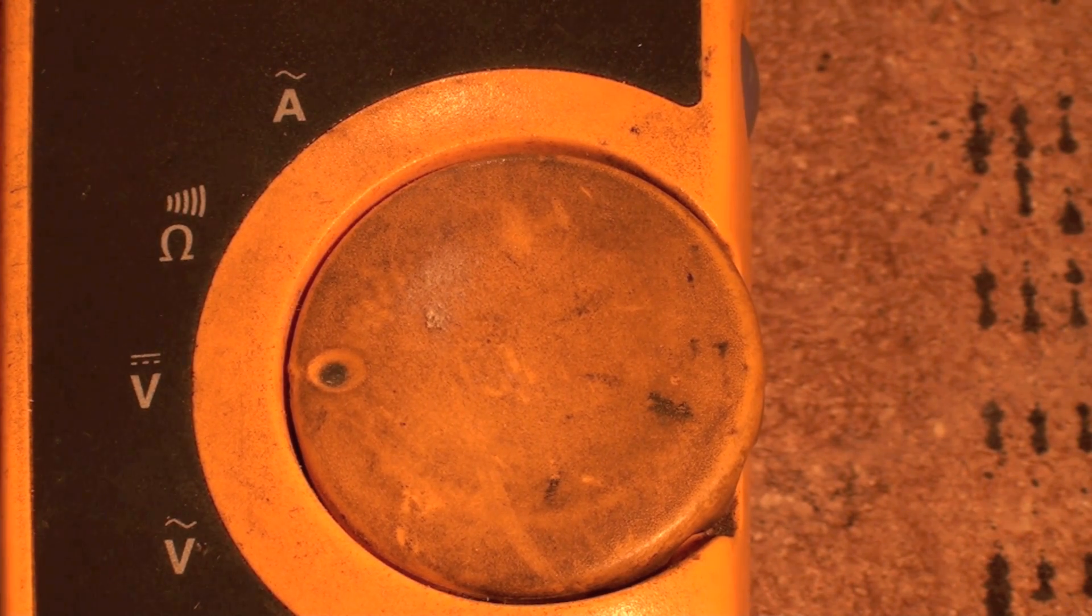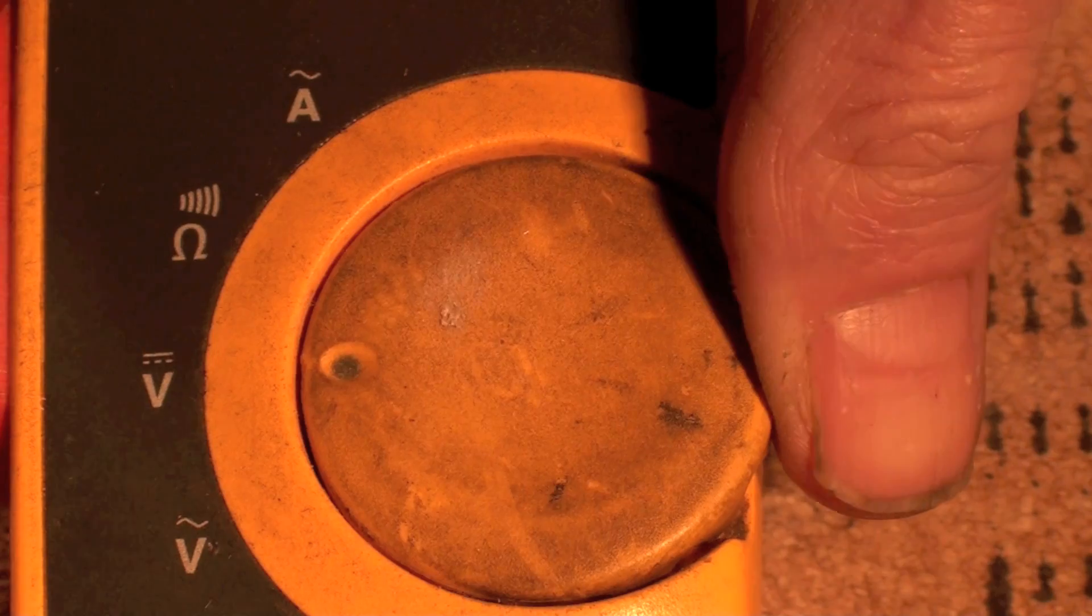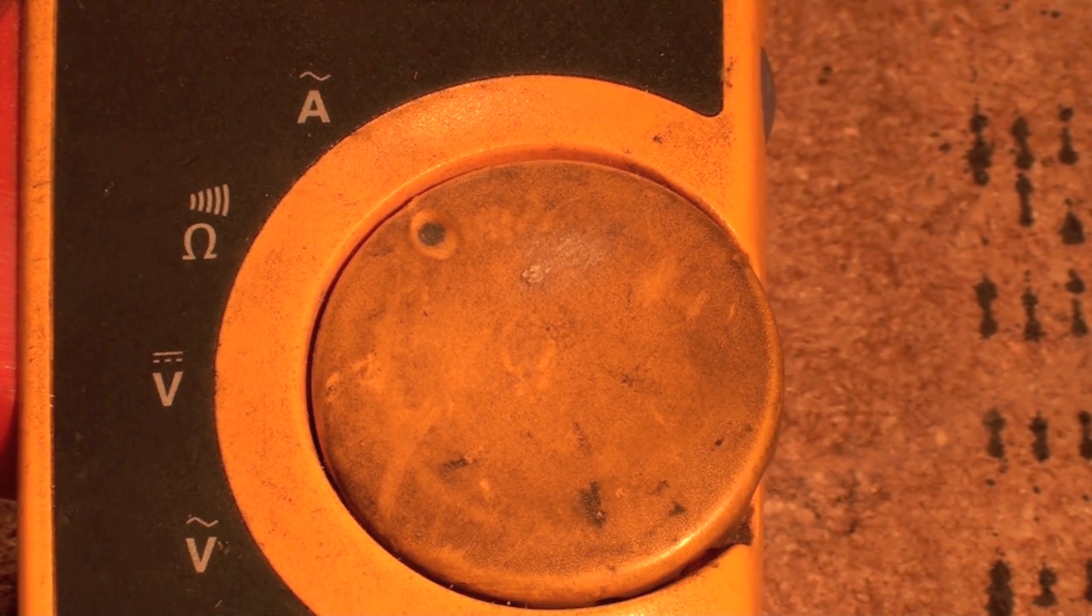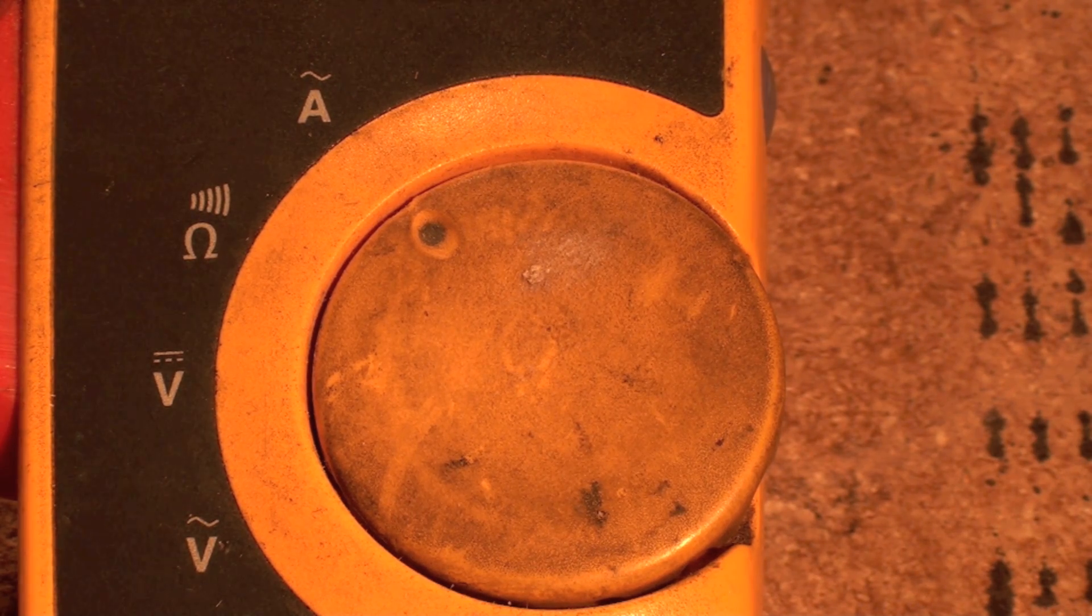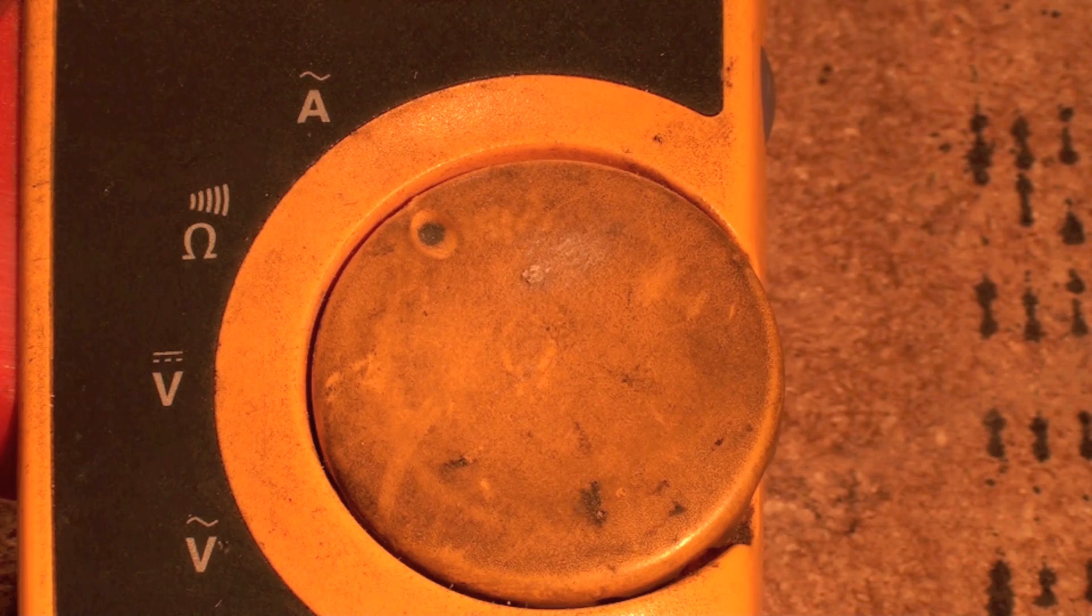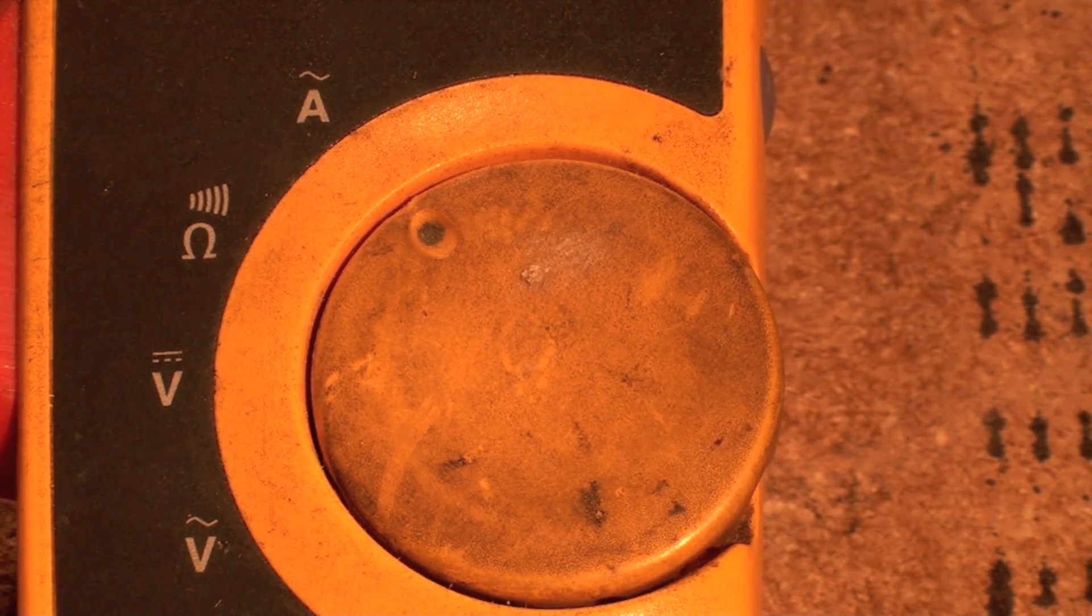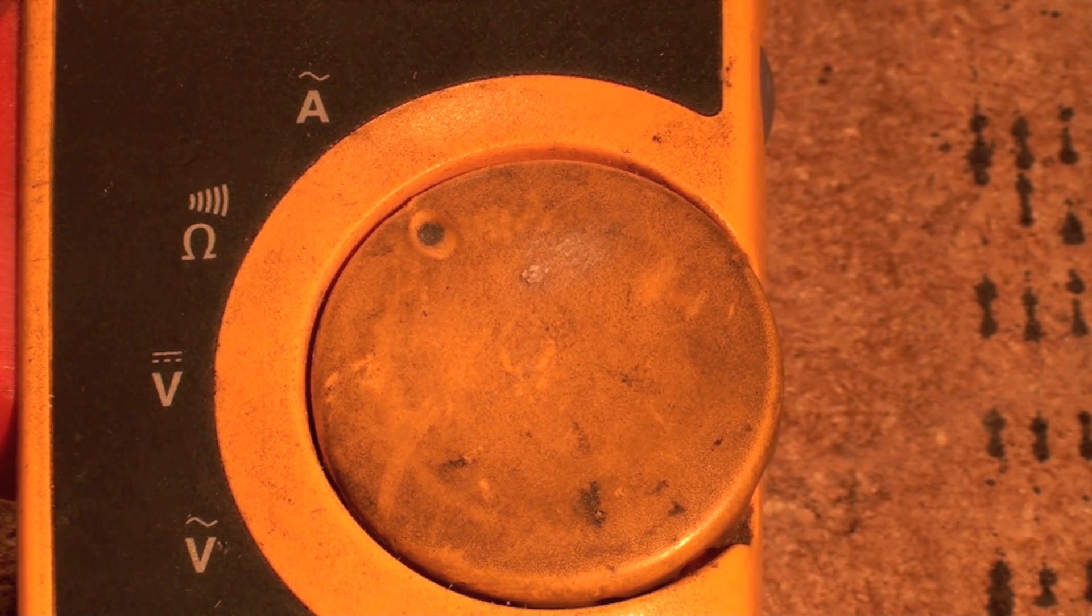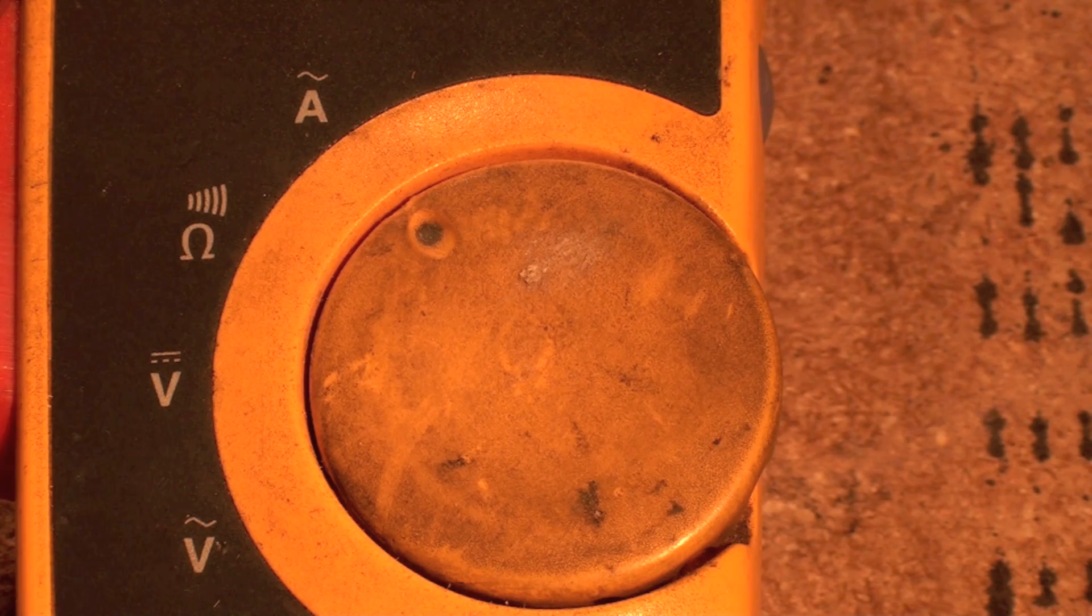The last position up here is AC amps. That's read by the clamp. When I close the clamp around one wire - you can't close around two, you've got to close around one wire - then I will read the amperage going through the wire. Very useful tool.